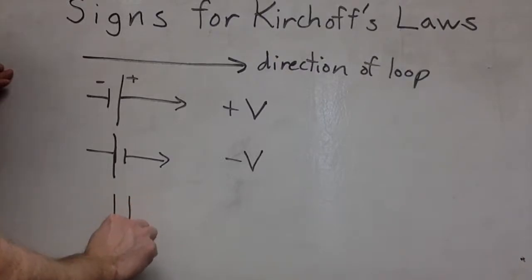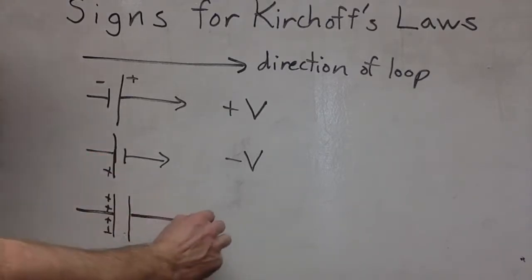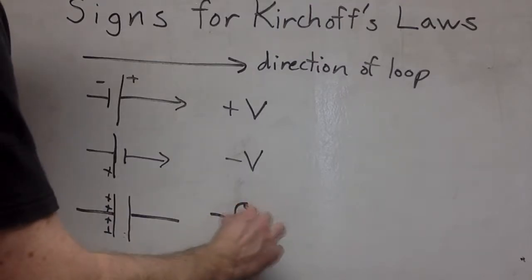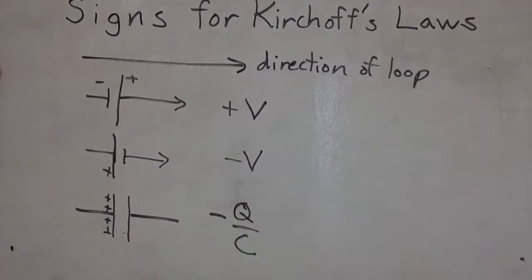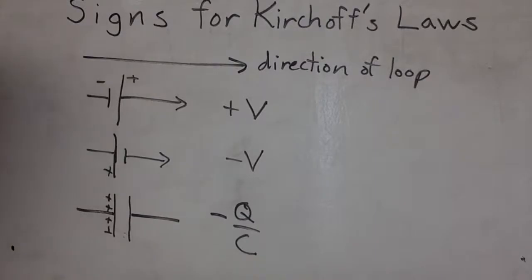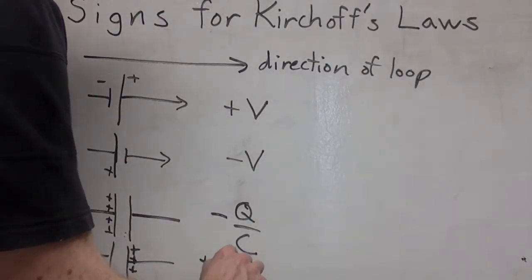If you have a capacitor and the capacitor is charged, if you go in the positive end, that's going to be a negative Q over C. But if you go the other way, if this end is positive, then it will be positive Q over C.